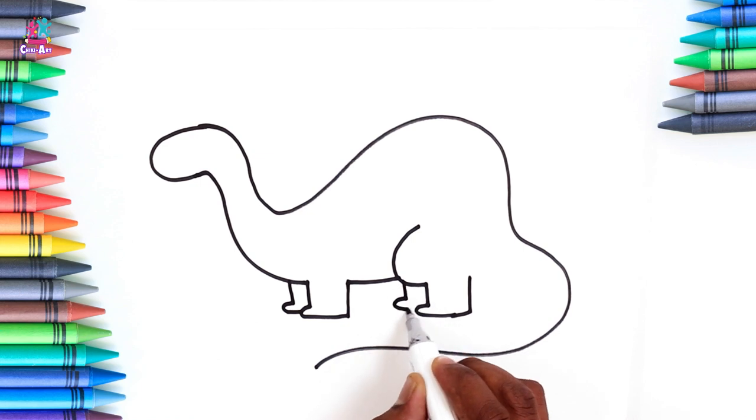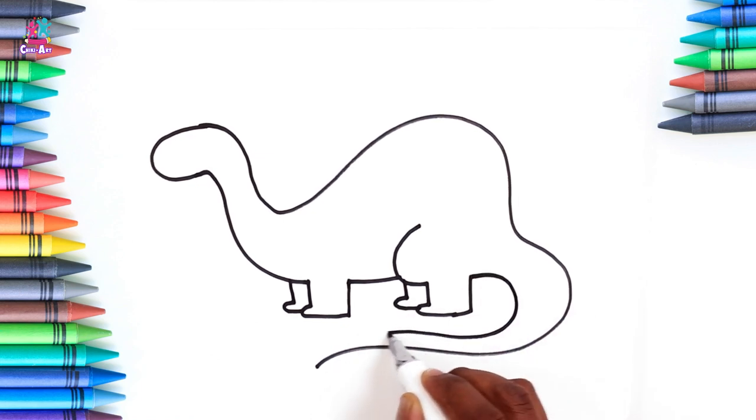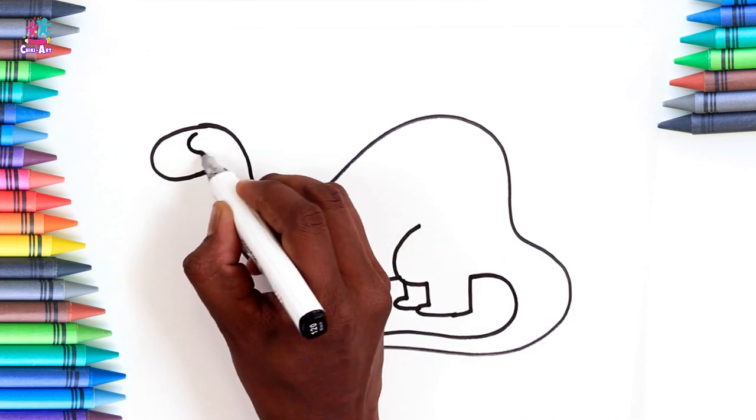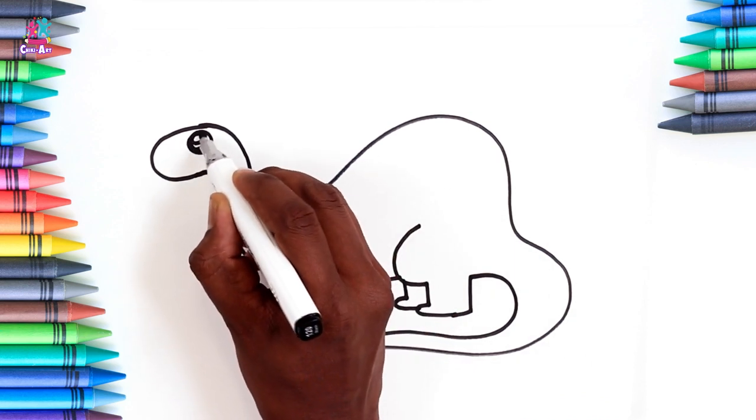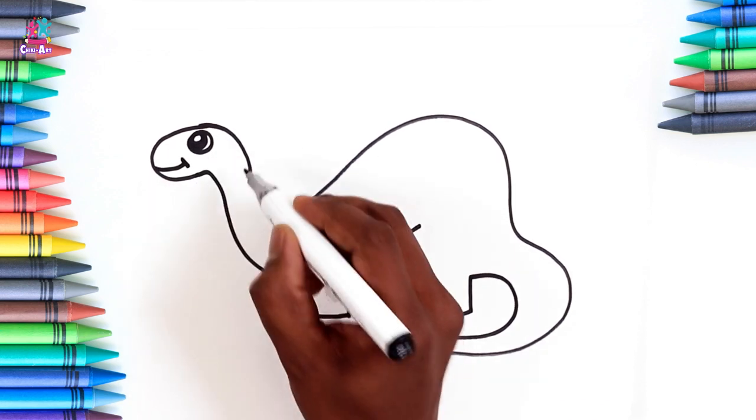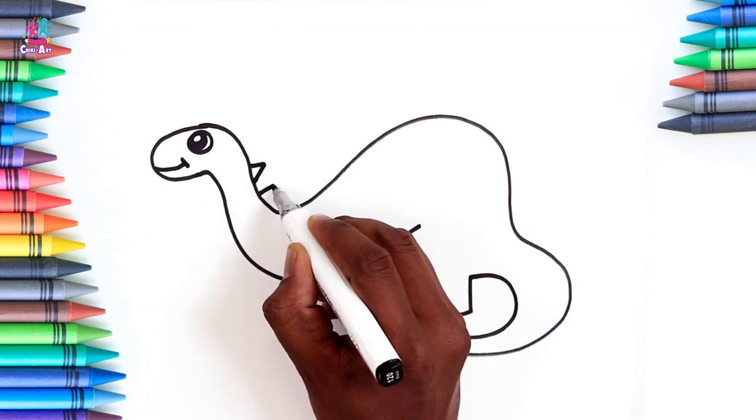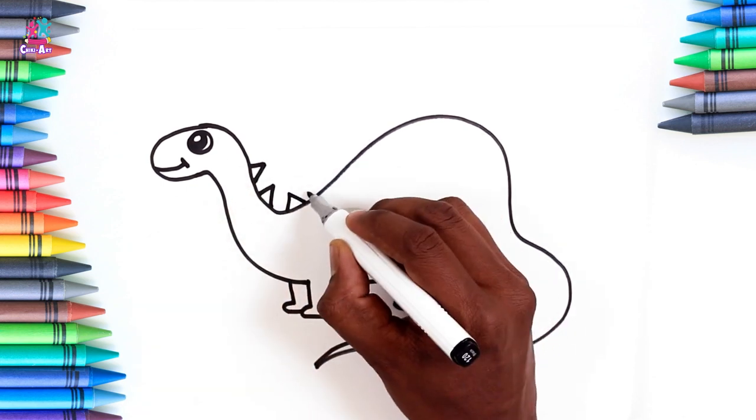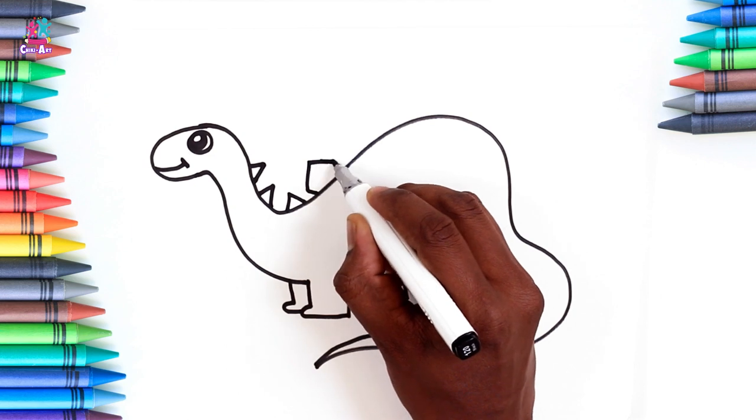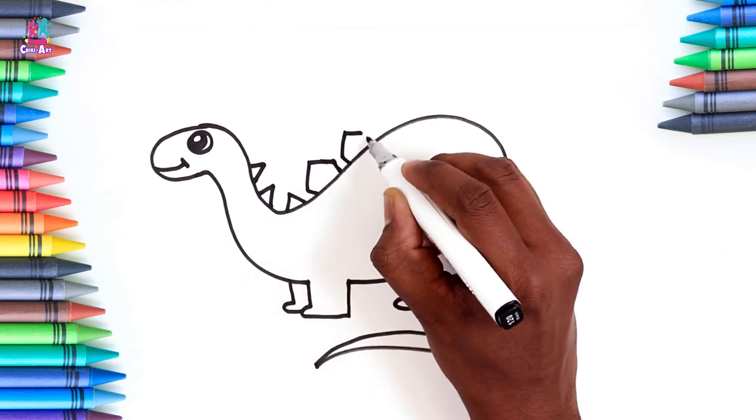And finishing off the tail. Some facial features. An eye, a smile, and some spikes. Some of them can be triangles, and some of them can be half a hexagon. Do you know what shape a hexagon is? It has six sides.